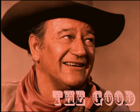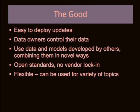Now I want to talk about what we learned while developing this system. First, the good things. The system makes it easy to deploy updates — if we fix a bug in a model or a dataset gets updated by any data owner, changes are propagated immediately to all users with no new software to install. Data owners retain control of their data, which is important to some people. We can use other people's data and models in ways that hadn't been anticipated — someone could register a new model and use it with new data to produce results nobody expected. The system is based on open standards with no vendor lock-in, and it's flexible.